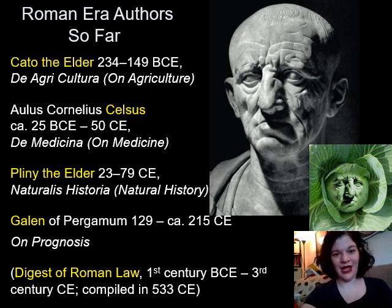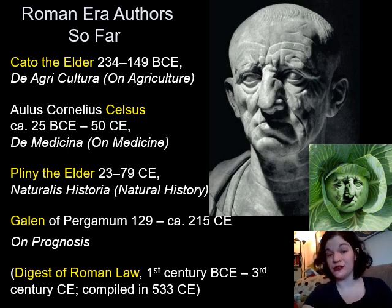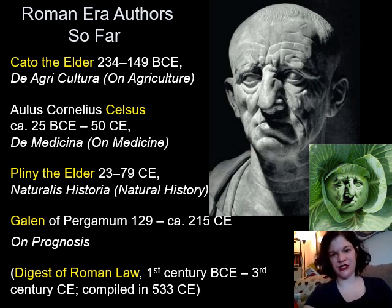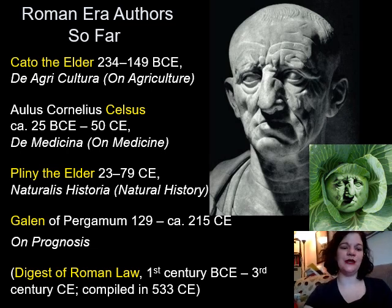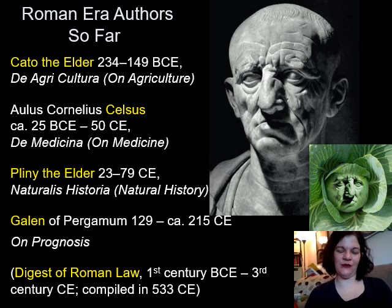His De Agricultura includes both advice for how to farm your land with enslaved labor and medical advice representing Italian folk medicine — the kind of stuff folks were using before upper-class Romans began to read medical authors and hire Greek-speaking doctors. Traditionally, it was the male head of household, the pater familias, whose duty it was to oversee healthcare for his family — not just blood relatives, but also enslaved folks, freedmen, everybody except his wife, who most of the time belonged to her father's family.